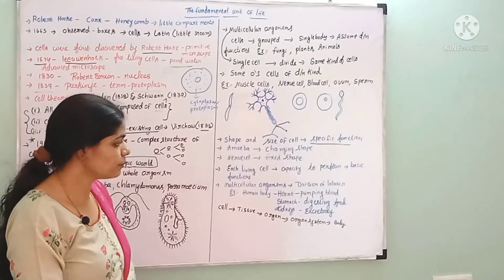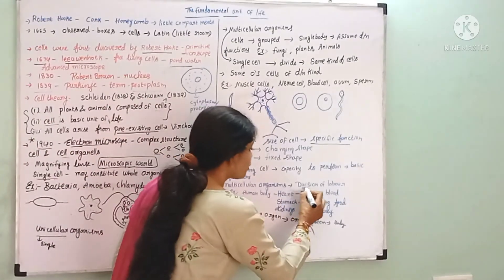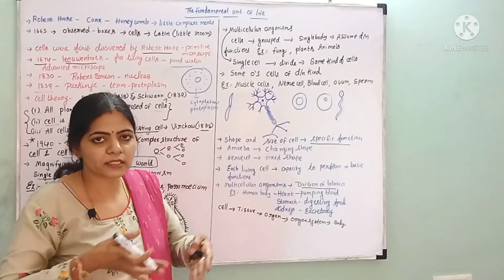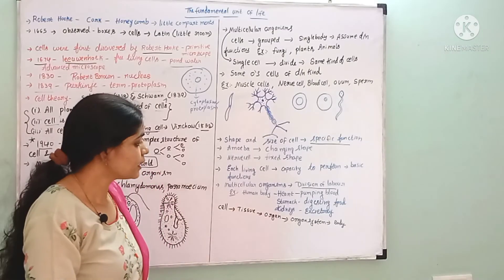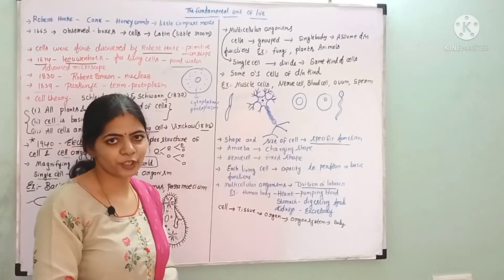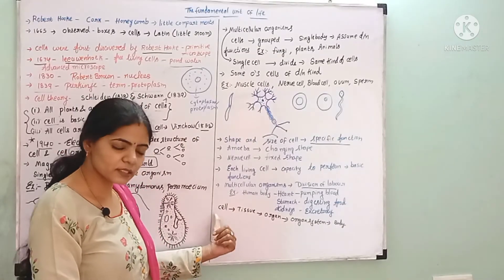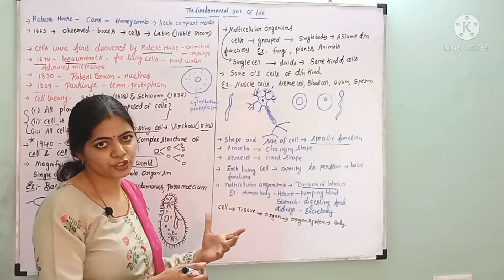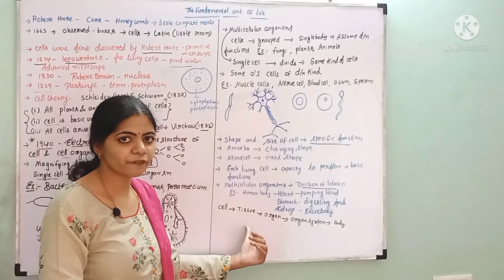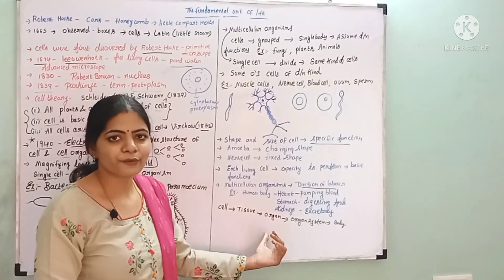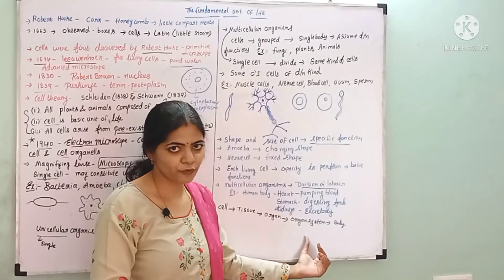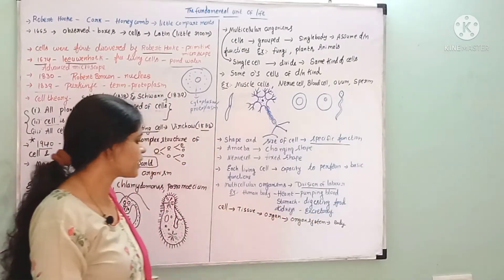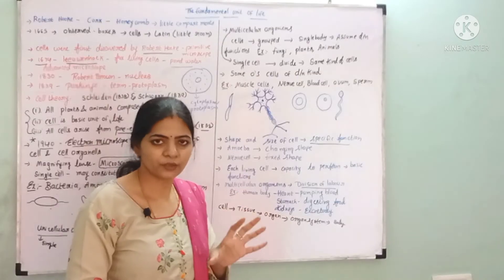Every living cell has the capacity to perform the basic functions of life. In multicellular organisms there is a division of labour — different organs and cells perform different functions. The body starts with a single cell; cells divide and form tissues, tissues form organs, and organs form organ systems, which together form the body.